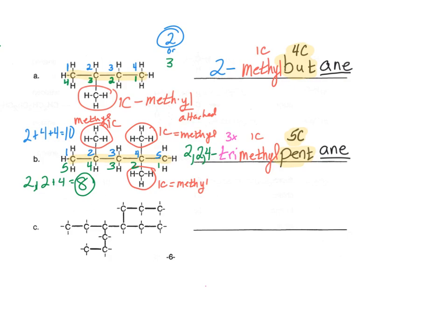Now let's look at compound C. The structure is a little unusual — we've saved space by not drawing in each hydrogen. This is not a correct drawing; it is neither a full structural formula nor a condensed structural formula, and you will not be able to draw your answer in this form. It is used just to save space for practice. It's a hydrocarbon with all single bonds, so it's an alkane with ending -ane. The longest carbon chain is eight, which means we now have octane.